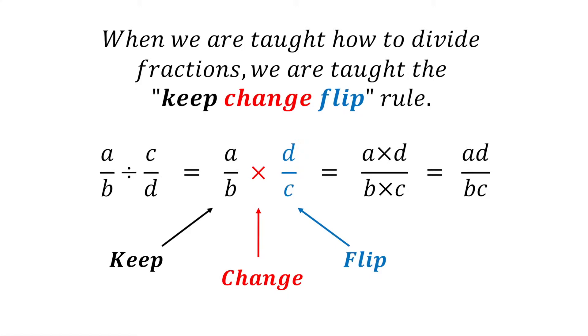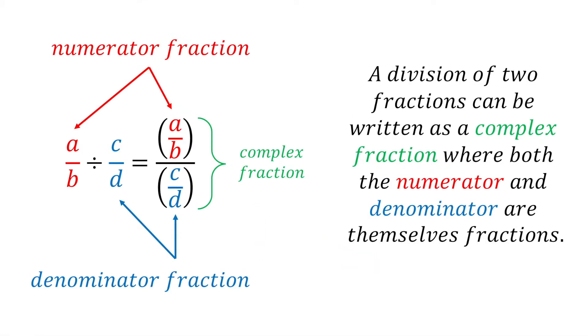So why does this rule work? To answer this we need to know four simple fraction rules. The first fraction rule we need to know is that a division of two fractions can be written as a complex fraction.